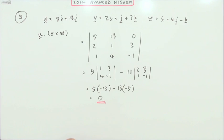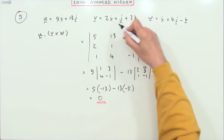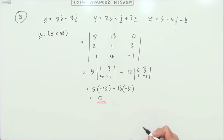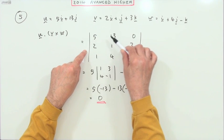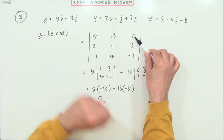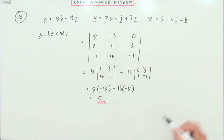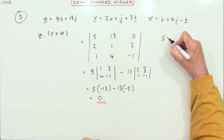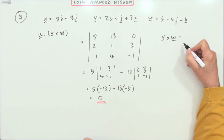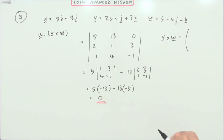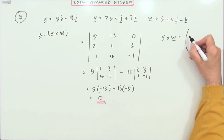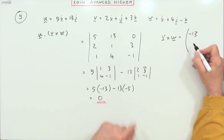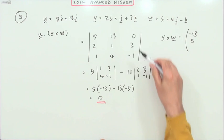Or you may have worked out v cross w first of all. v cross w would be the same as this only you would have i, j, and k for the top row. So if you did that, you would have v cross w equal to, I'll just put it in component form because obviously it'll be these same two numbers, it would be negative 13.